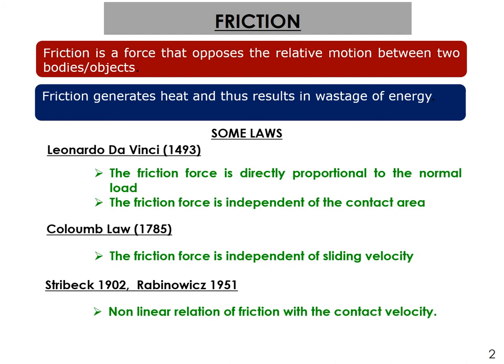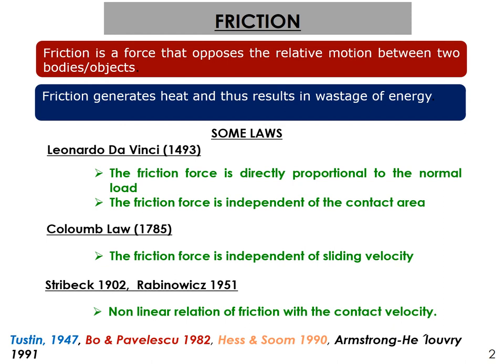Likewise many people came up with their research outcomes. Tustin in 1947 found that the relationship between friction force and velocity was exponential. Bo and Fevelissu in 1982 said the relation is generalized — they agreed there is a relation between friction and velocity but it is generalized. Hess and Schoom in 1990 said the relation is Lorentzian between friction and contact velocity. Armstrong in 1991 said there is a Gaussian relationship.